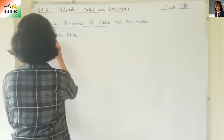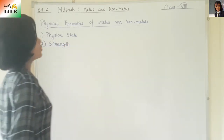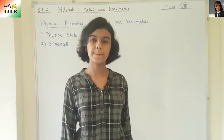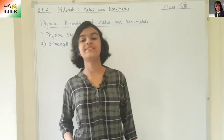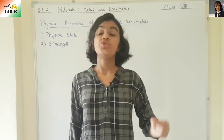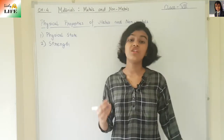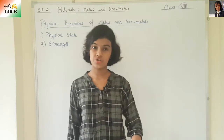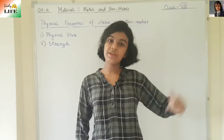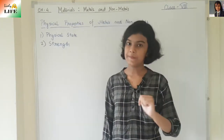Next physical property is strength. Most metals are very hard and strong. Exceptions are sodium and potassium — these metals are not hard or strong; they are very soft.